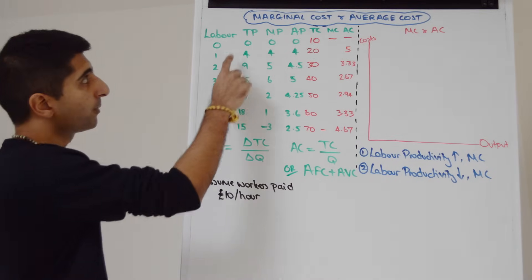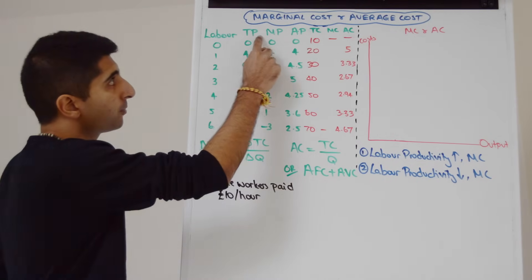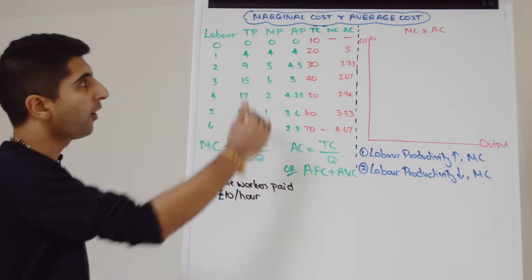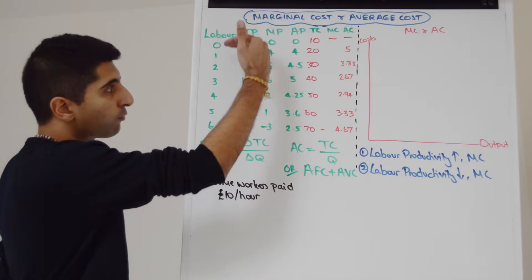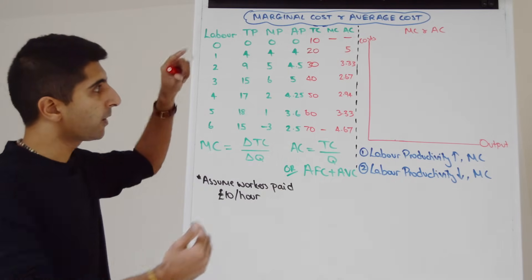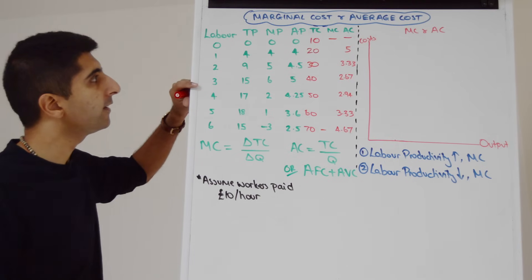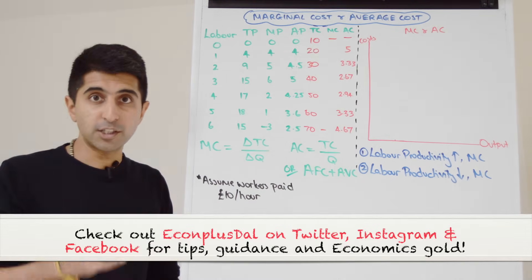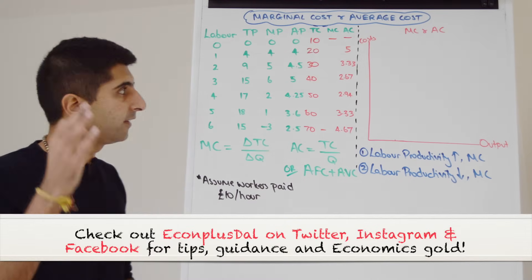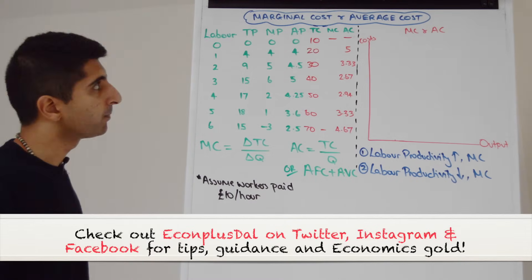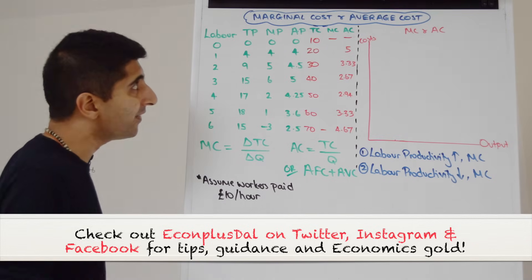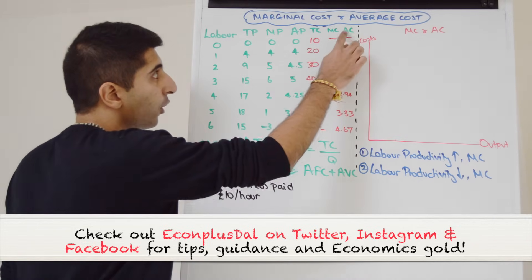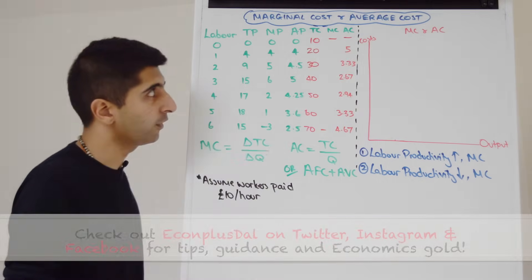What we can see clearly from total product, marginal product, and average product is the law of diminishing returns. All these figures are rising initially when we employ more workers, and then the figures start to fall when diminishing returns start to set in. What I've done now is extended this table to include total cost, marginal cost, and average cost.